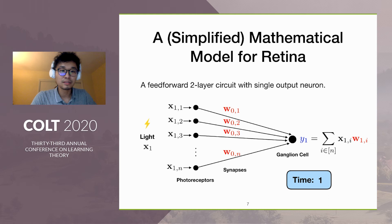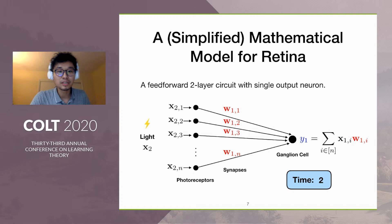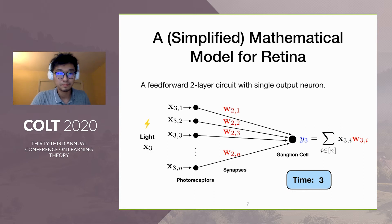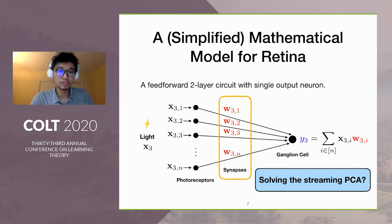The dynamics will change the weight accordingly, then we receive a new input and change the potential respectively, and change the weight vector, and so on. The question here is: what kind of synaptic update rule can solve streaming PCA?